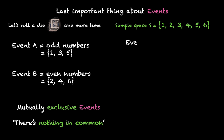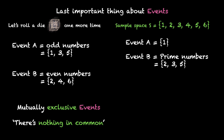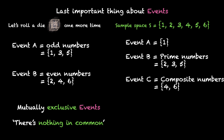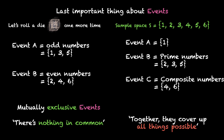For this case, we can say that events A and B are mutually exclusive events. When there's nothing in common, we call the events mutually exclusive. Let's look at another example. Event A is just {1}, event B has all the prime numbers {2, 3 and 5}, and event C has the composite numbers {4 and 6}. If you add all of them up, you get the entire sample space — together they cover up all things possible. When this happens, we call these events exhaustive events — they've exhausted all possible outcomes.